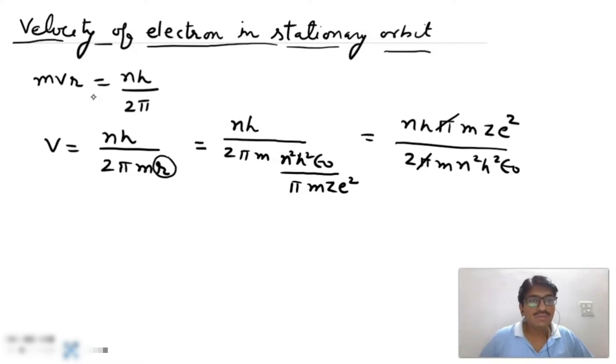M cancel out and one n cancel out. Now we can write V is equal to, also one h cancel out, V equal to ze² upon 2nh ε₀.